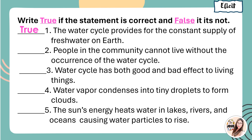For number two, people in the community cannot live without the water cycle. The answer is true. Number three, water cycle has both good and bad effects on living things. It is true. Number four, water vapor condenses into tiny droplets to form clouds. The answer is true.